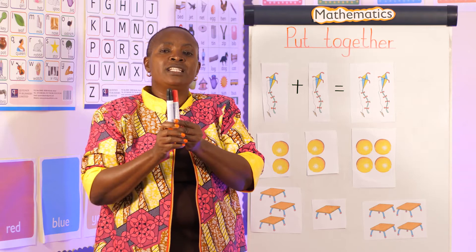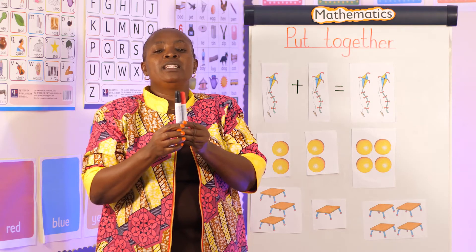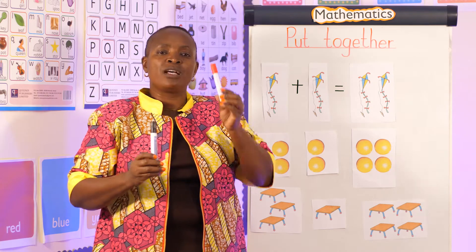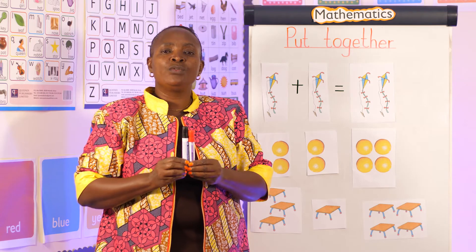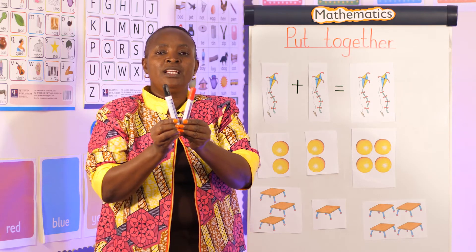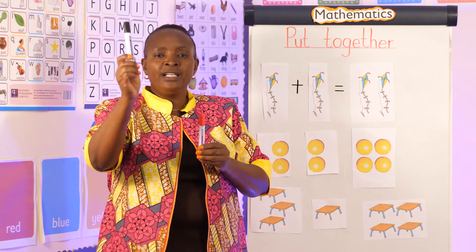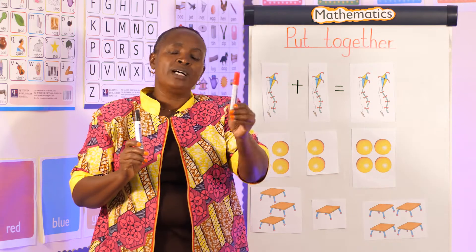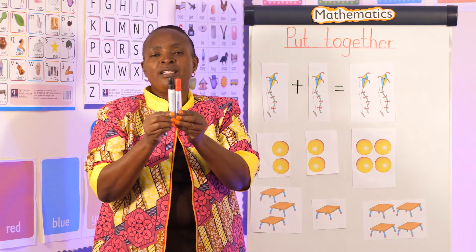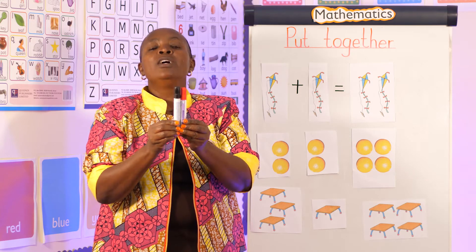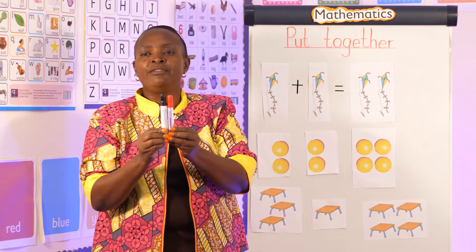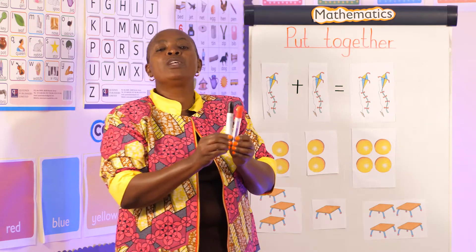This is one and this is one, so if I put them together I get one, two. That tells us that one plus one is equal to two. Children, we can count so many things in our environment; we can put together so many things.